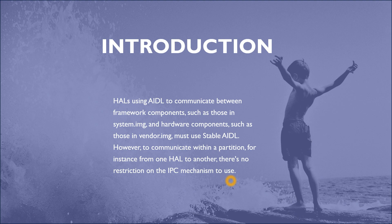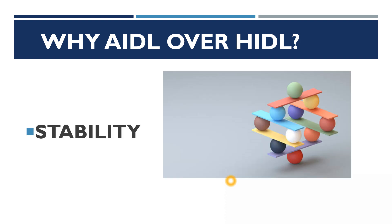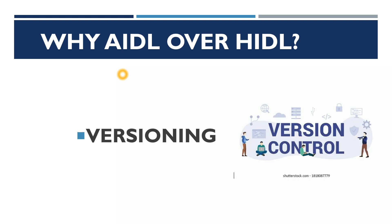Now, why did Google decide to use AIDL over HIDL? The first reason is stability. AIDL has been used for a long time — between applications, in the application layer, and in the framework layer. We are quite familiar with AIDL, so it is more stable compared to HIDL. That's one of the reasons Google decided to shift to AIDL.